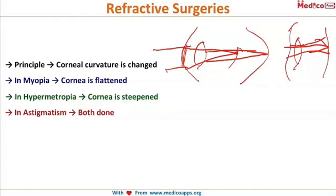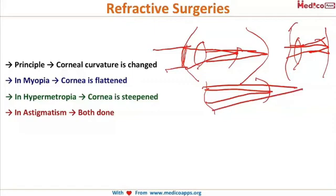In hypermetropia, the image focuses behind the retina, so the cornea is steepened to help converge light exactly on the retina. In astigmatism, both flattening and steepening procedures are done.